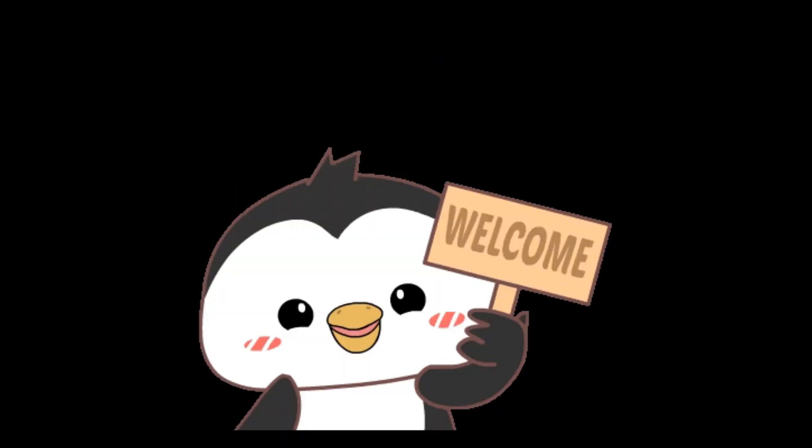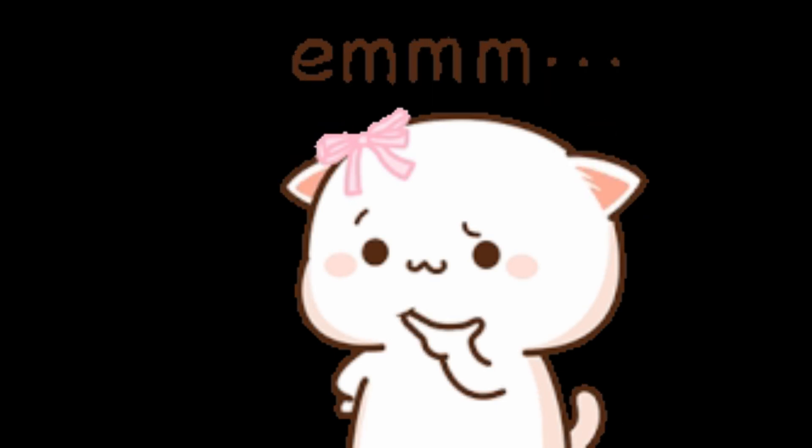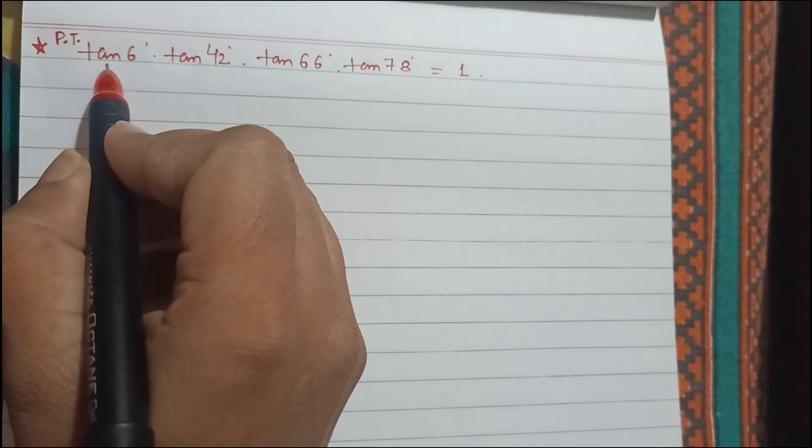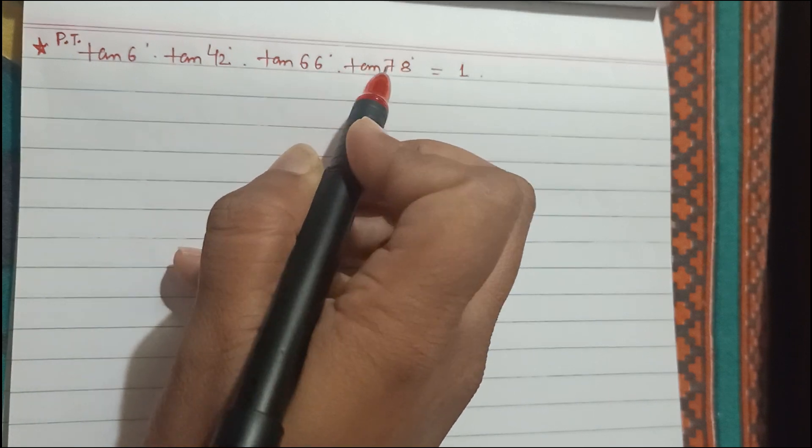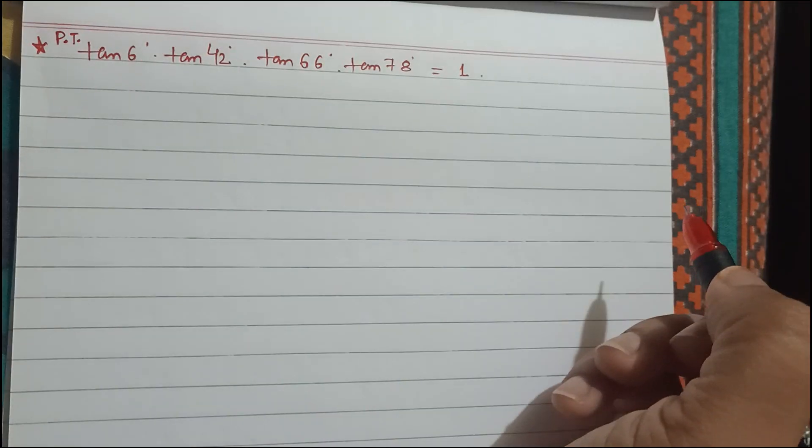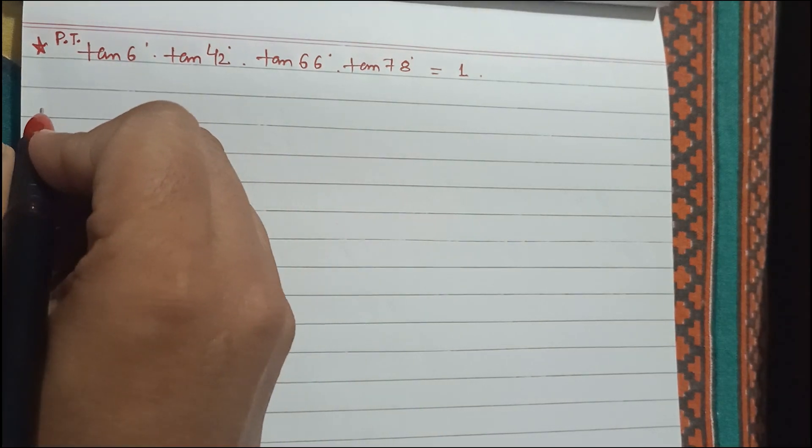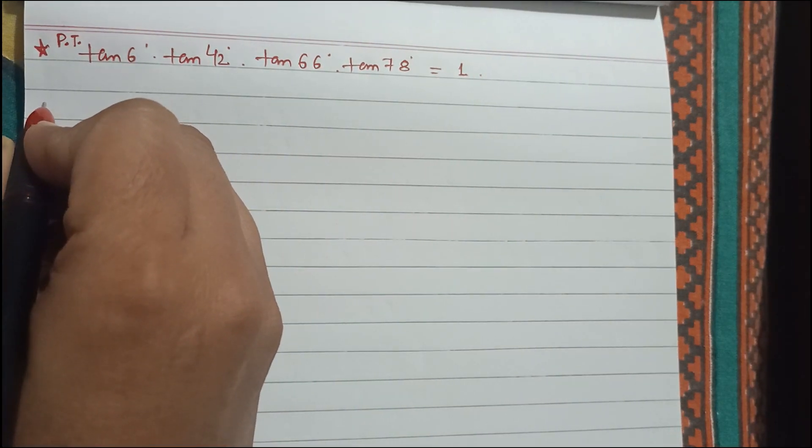Welcome to my channel guys. Today we are going to solve a problem that is prove that tan 6 degree into tan 42 degree into tan 66 degree into tan 78 degree is equals to 1.